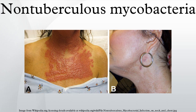M. leprae and M. lepromatosis cause Hansen's disease or leprosy. Non-tuberculous mycobacteria are all the other mycobacteria, which can cause pulmonary disease resembling tuberculosis, lymphadenitis, skin disease, or disseminated disease.